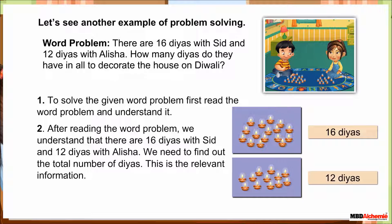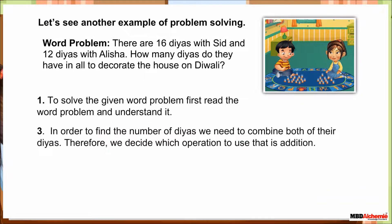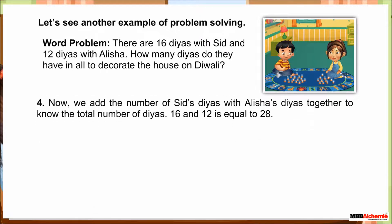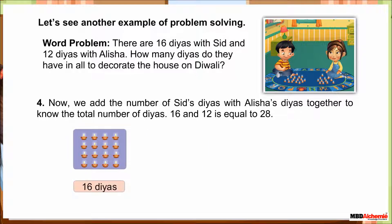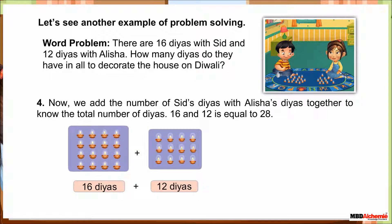Step two: after reading the word problem, we understand that there are 16 diyas with Sid and 12 diyas with Alicia. We need to find out the total number of diyas. This is the relevant information. Step three: in order to find the number of diyas, we need to combine both of their diyas. Therefore, we decide the operation to use, that is addition.